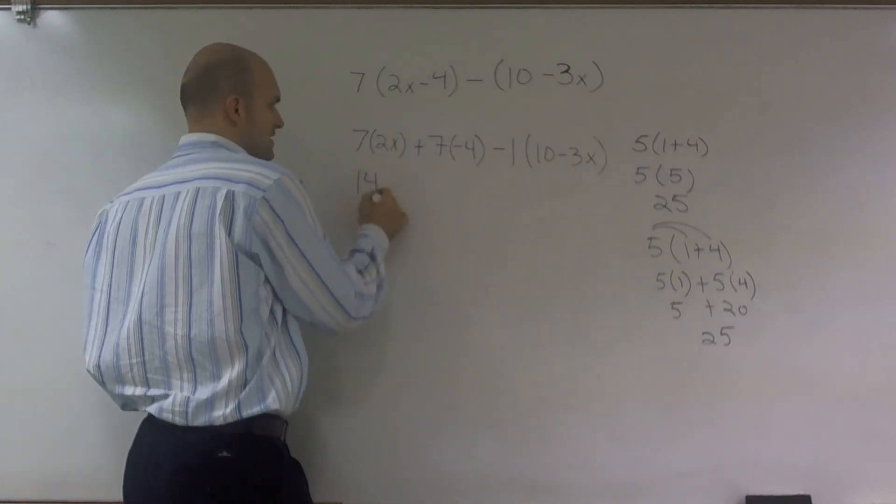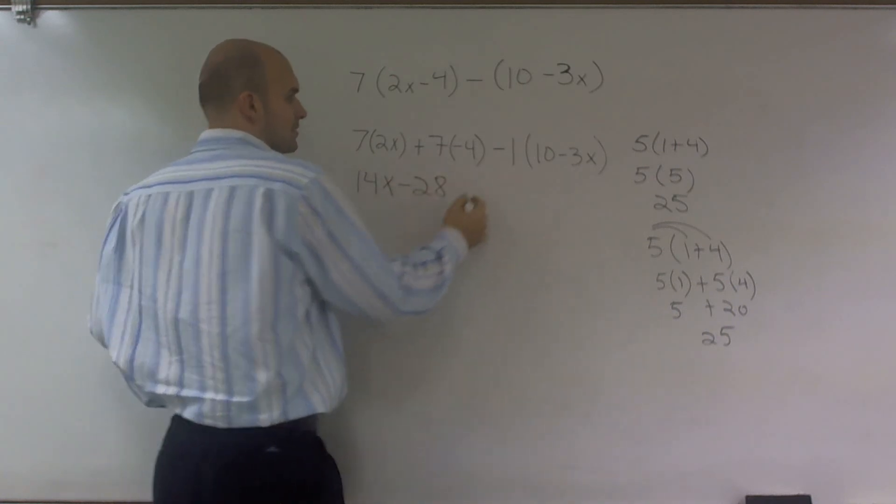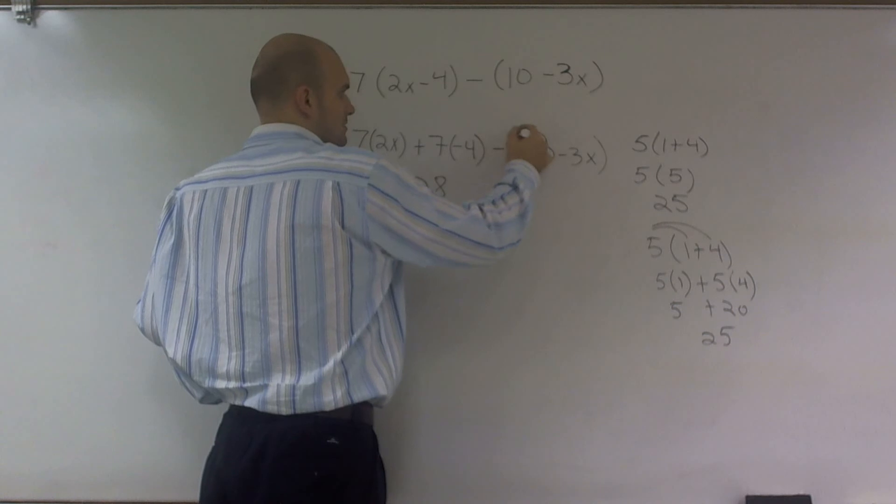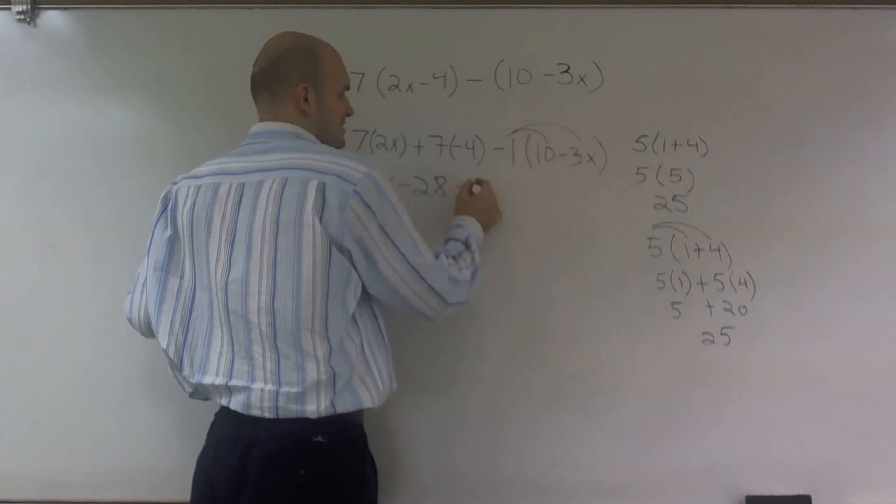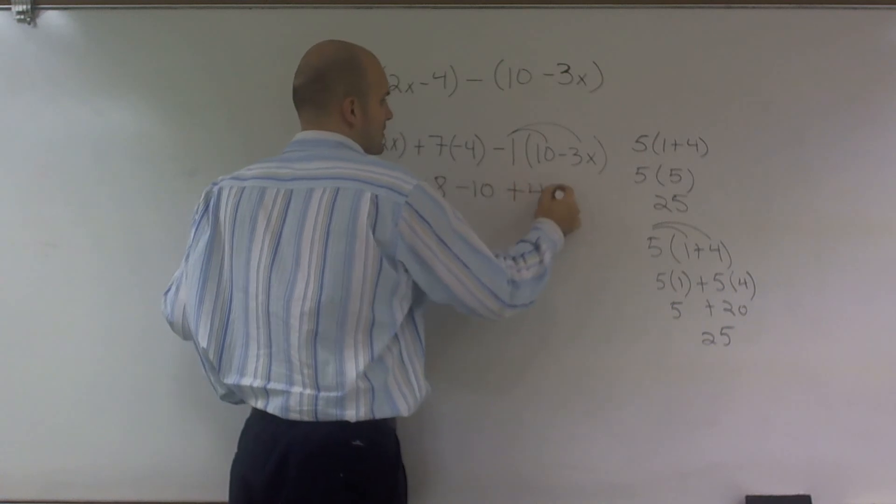So this becomes 14x. A positive 7 times negative 4 is negative 28. Negative 1 times 10 is negative 10, and negative 1 times negative 3x is positive 3x.